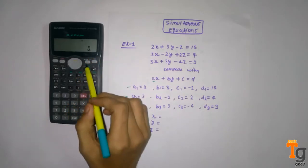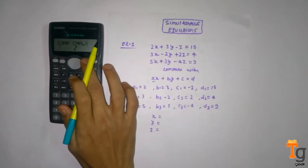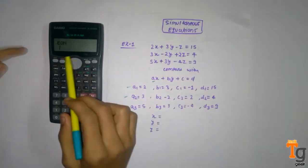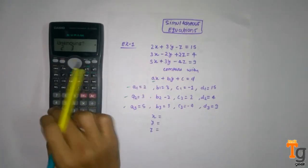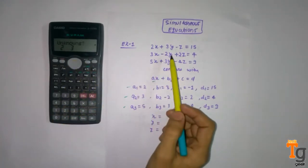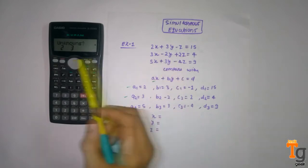First we have to click on mode until we find the equation. Here you can see equation, so press 1 for this and here we have unknowns so we will click on 3.